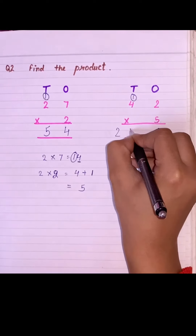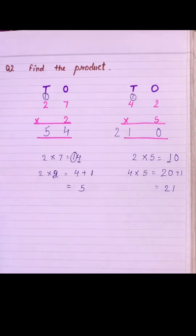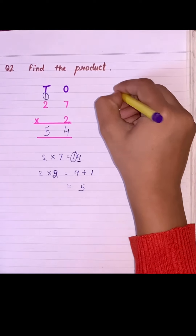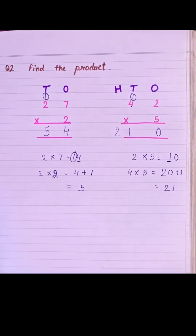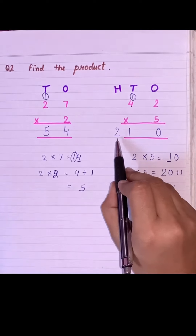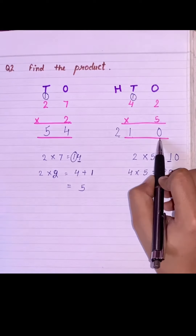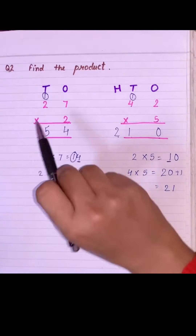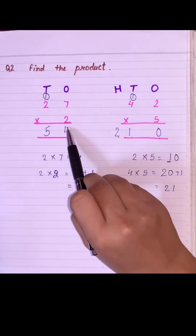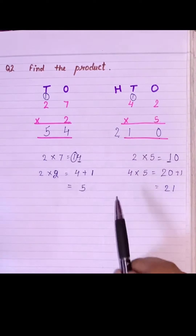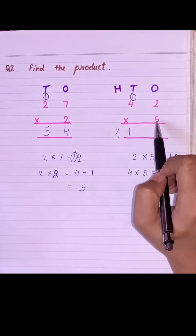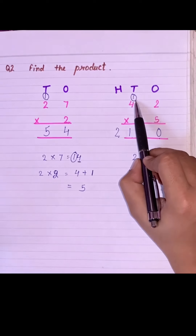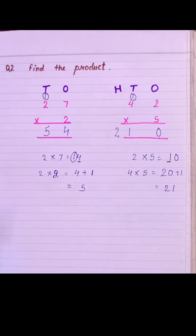That means students, we have a three-digit number — the H here means hundreds — so my answer is 210. I hope students you have understood how to multiply a two-digit number by a single digit with carry over and how we add the carry over. That's it for the day. Thank you and have a nice day.